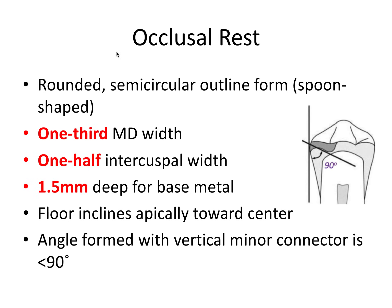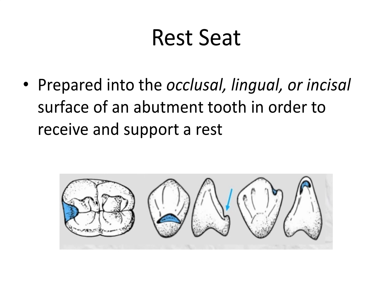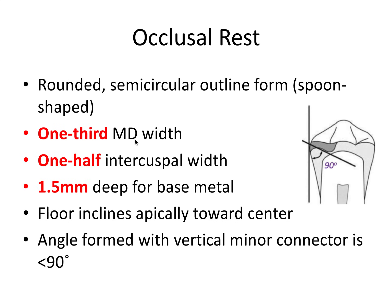The occlusal rest has a rounded semicircular outline form and can be described as spoon-shaped. An occlusal rest would contact the occlusal surface of any posterior abutment tooth — a premolar like in this image or a molar. For measurement guidelines, they're typically about one-third the mesiodistal width of the tooth. And buccolingually, it's about one-half the intercuspal width.